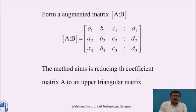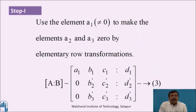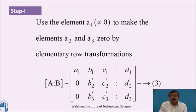The method aims at reducing the coefficient matrix A to an upper triangular matrix. Upper triangular matrix means making the elements below the principal diagonal become zero. In the first step, use element a1 — the first element of the first row and first column, which is not equal to zero — to make elements a2 and a3 zero by elementary row transformation.